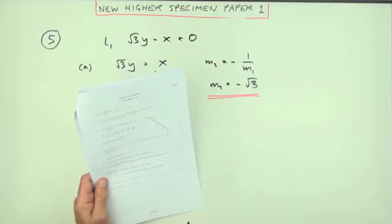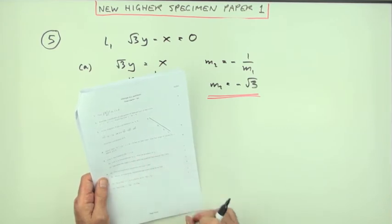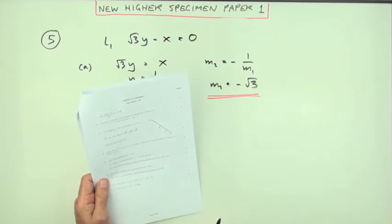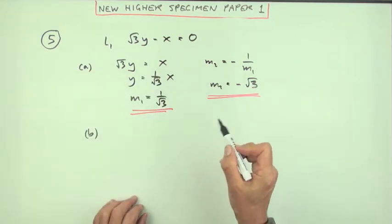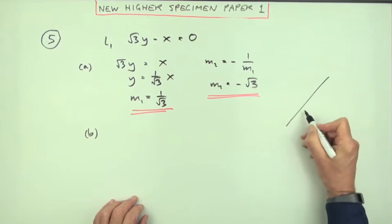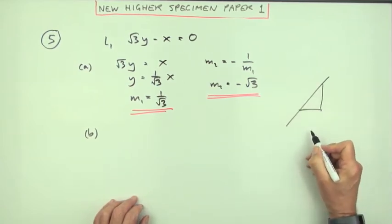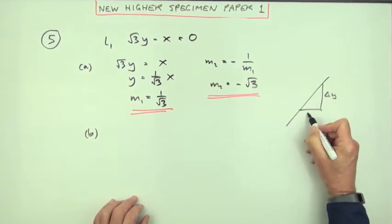Now part B: calculate the angle line two makes with the positive direction of the x-axis. Well, you've got that connection between gradient and angle for a line.